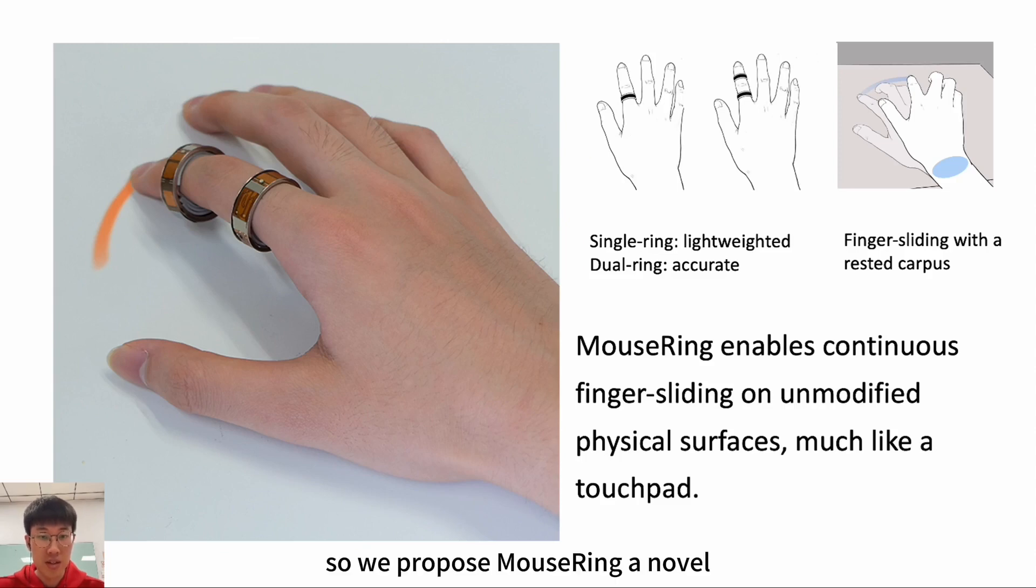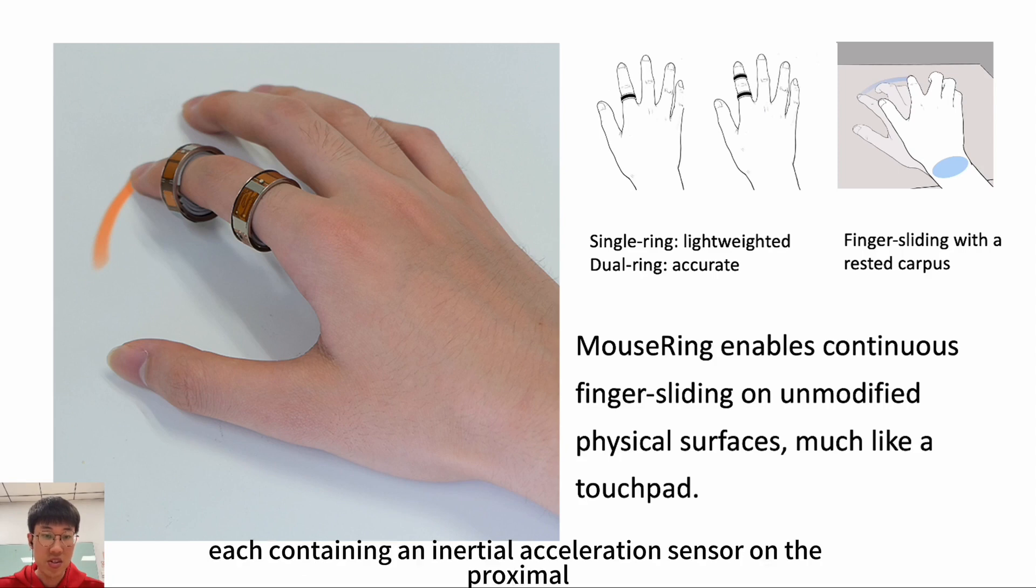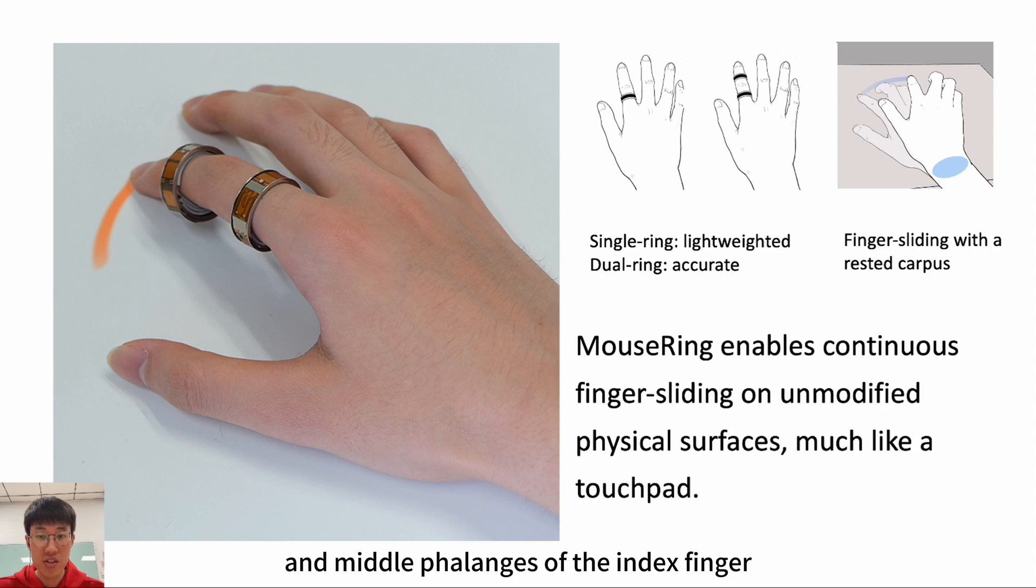So, we propose MouseRing, a normal ring-shaped IMU device that enables continuous finger sliding on any unmodified physical surfaces, much like a touchpad. Now, let me briefly introduce how MouseRing is worn and how it works. First, the user can choose either to wear one or two ring devices, each containing an inertia acceleration sensor on the proximal and middle phalanges of the index finger. While a two ring configuration is more precise, a single ring configuration can offer a more comfortable wearing experience.